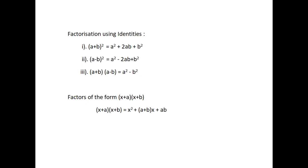Next, factorization using identities. The three identities used for factorization are: (a plus b)² equals a² plus 2ab plus b²; (a minus b)² equals a² minus 2ab plus b²; (a plus b)(a minus b) equals a² minus b². Also, (x plus a)(x plus b) equals x² plus (a plus b)x plus ab.